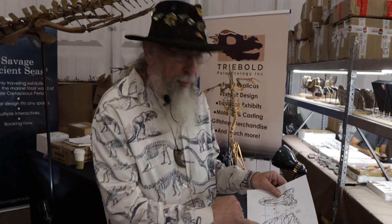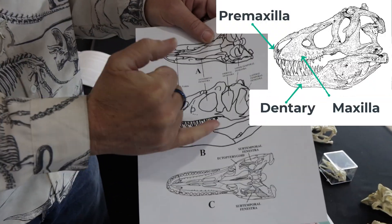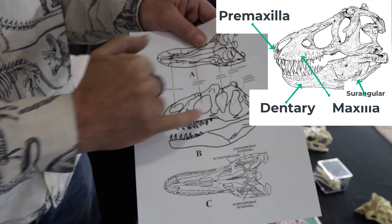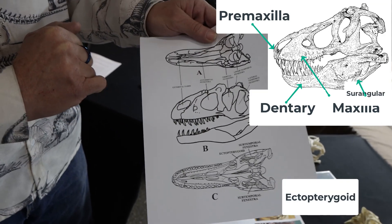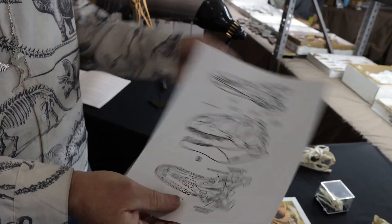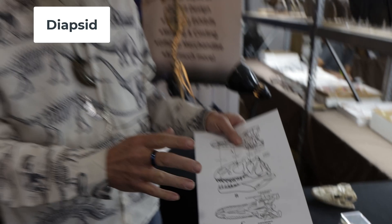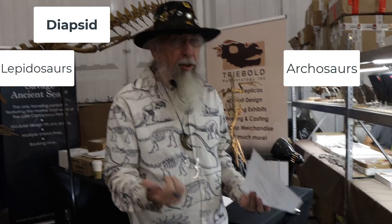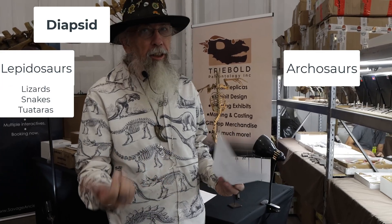There are other bones that are very important in this discussion: the premaxilla, the maxilla, the dentary, the surangular, this little U-shaped bone which is the ectopterygoid, and a little bit about the nasal. The diapsids are also broadly divided into two groups: you've got your lepidosaurs with your lizards, snakes, and tuatara, and you've got your archosaurs.